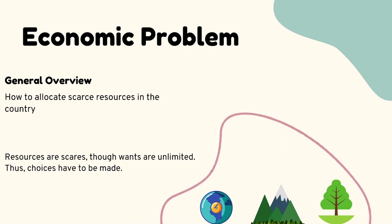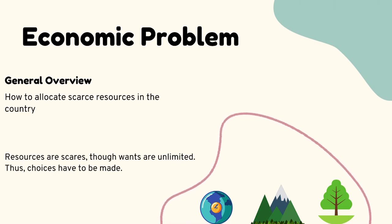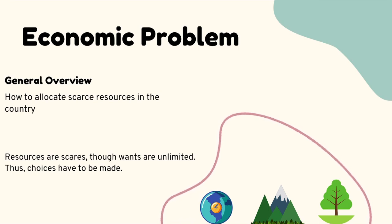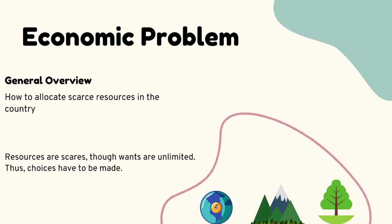For example, if you have to choose between commerce and science, and if you choose commerce over science, then science becomes the opportunity cost. Opportunity cost is the next best alternative forgone. Choice leads to opportunity cost.